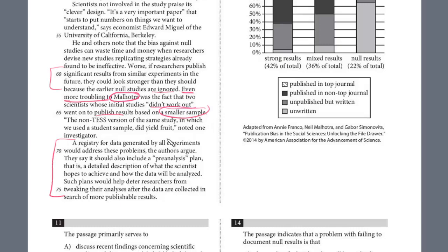a registry for data generated by all experiments would address these problems. The author argued they say it should include a pre-analysis plan that is a detailed description of what scientists hope to achieve and how the data will be analyzed. And it would deter researchers from tweaking, selectively using their analyses after the data are collected in search of more publishable results. So it really kind of directly addresses this problem with a potential solution.